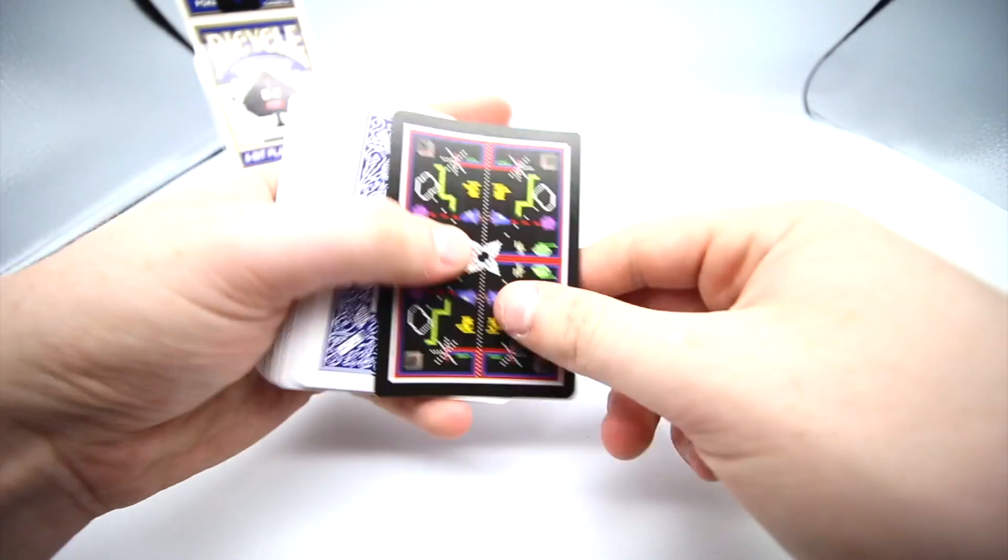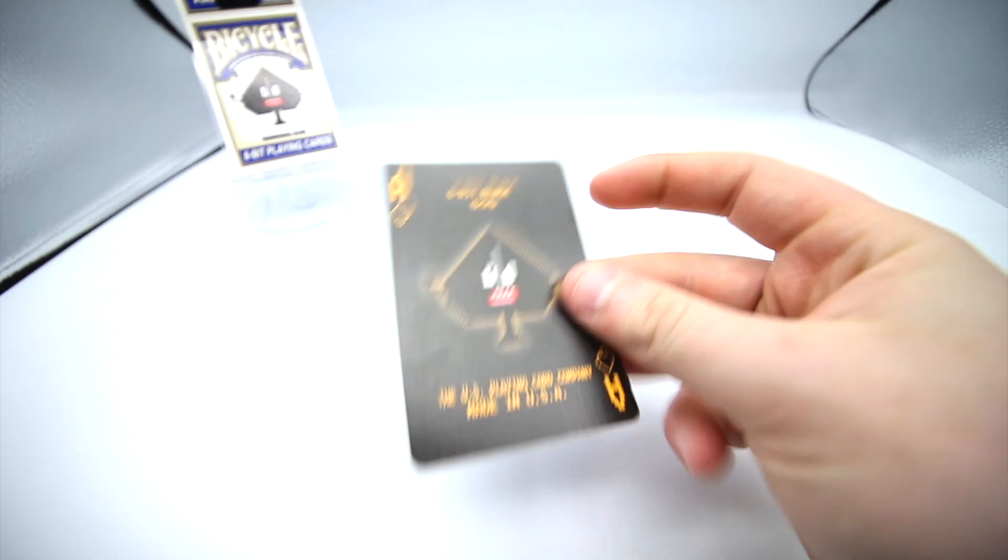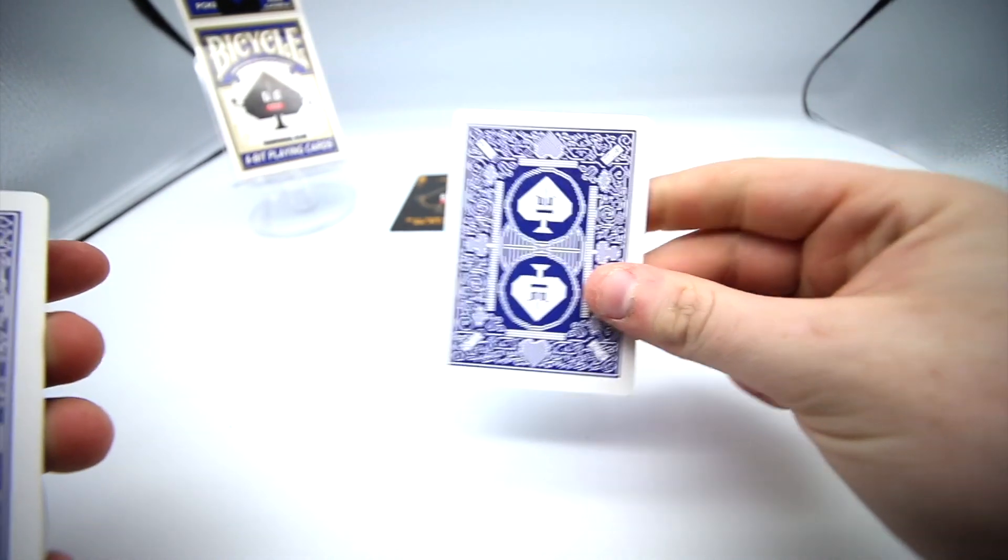First of all, you get this ad for another deck—another style of it, an 8-bit cool little card there. Then this shows the Ace of Spades for the Black Edition, which is quite cool.